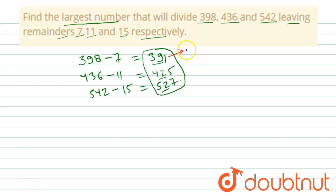The factors of 391 is 17 into 23, and 425 is 5 into 5 into 17, and 527 is 17 into 31.